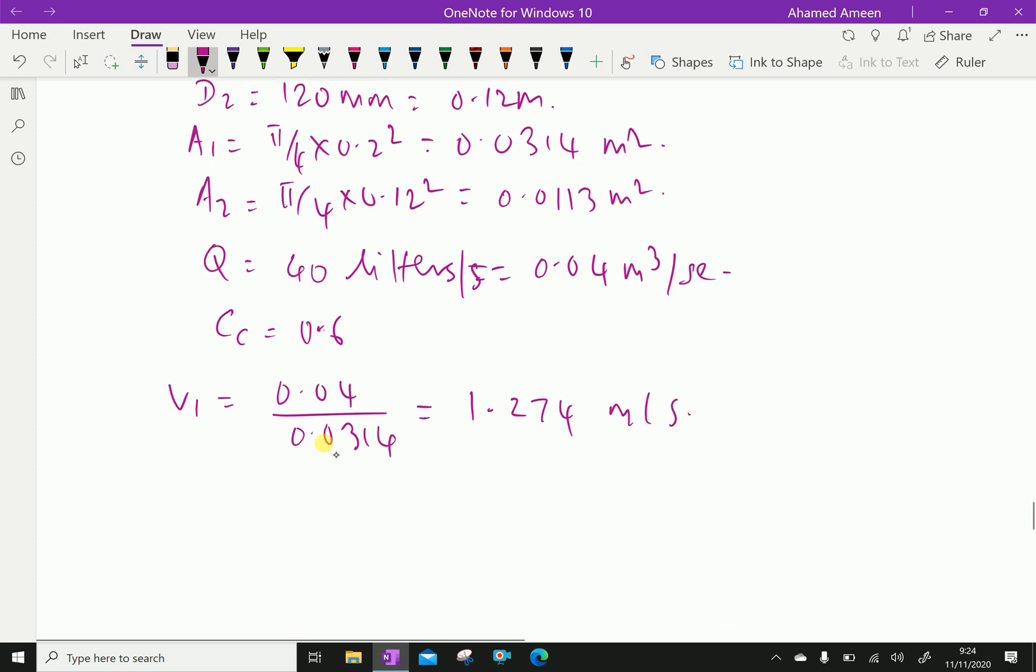Similarly, V2 velocity at section 2 is 0.04 over 0.0113, which is equal to 3.540 meters per second.